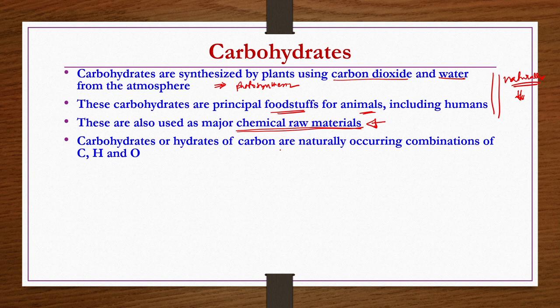Carbohydrates are hydrates of carbon — that is one way they are known. They are naturally occurring combinations of C, H, and O — nothing else. If any element other than C, H, and O is present, we cannot call them carbohydrates purely. They can be organic chemicals but they cannot be carbohydrates. In carbohydrates, you have purely combinations of C, H, and O.